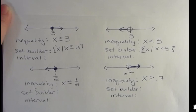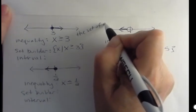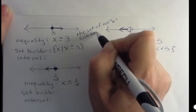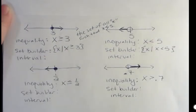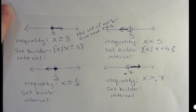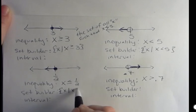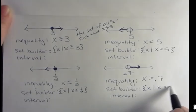Set builder notation is just a more formal way to say the set of all x such that x is less than 5, or whatever it is you're saying — the set of all x such that. So we're saying all the x's that fit this description. Set builder down here: the set of all x such that x is less than or equal to one half. The set of all x such that x is greater than 0.7.